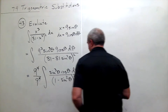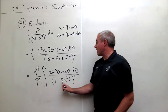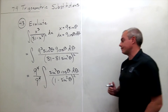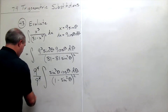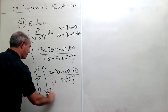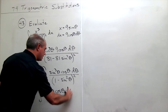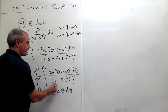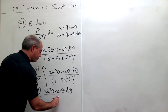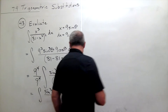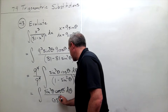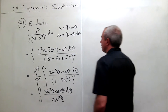Now 1 minus sine squared theta equals cosine squared theta. Substituting that in, we get the integral of sine cubed theta times cosine theta d theta all over cosine squared theta squared, which is cosine to the fourth theta. Clearly one cosine on top cancels with one on bottom, leaving cosine cubed theta on the bottom.